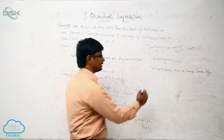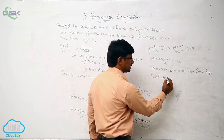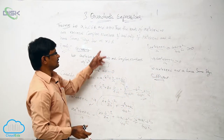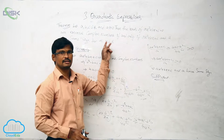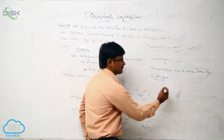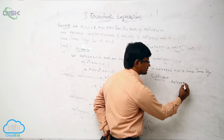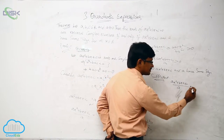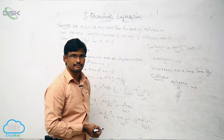Now, what will be the sufficient condition? We have to consider that Ax squared plus Bx plus C and A have the same sign, and we need to prove this. That is, Ax squared plus Bx plus C and A having the same sign means their ratio should be greater than 0.